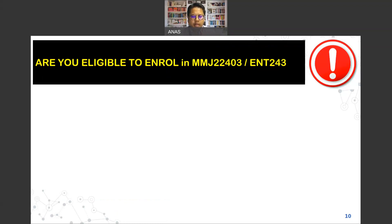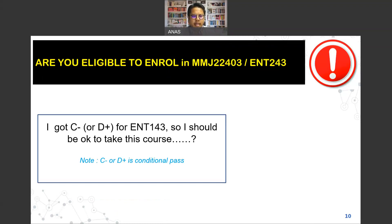Before we go further into discussing the course, the first question you should ask yourself is about eligibility to enroll. Thermodynamics 2 is a continuation of Thermodynamics 1, and Thermo 1 is set as the prerequisite — you need to have passed it to proceed. A commonly asked question is whether getting a C minus or D plus, which is a conditional pass in Thermo 1, allows you to proceed to Thermo 2.